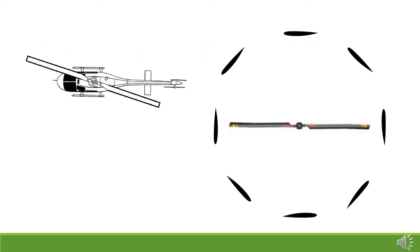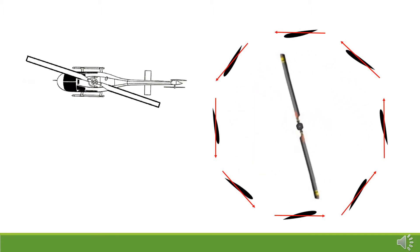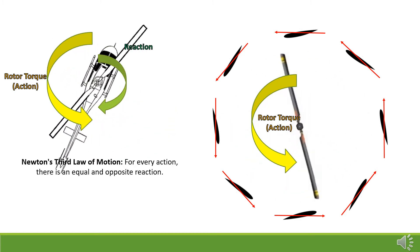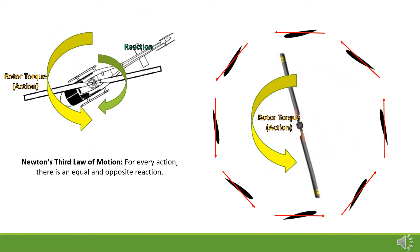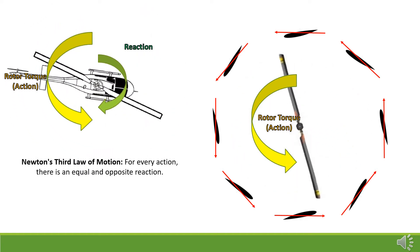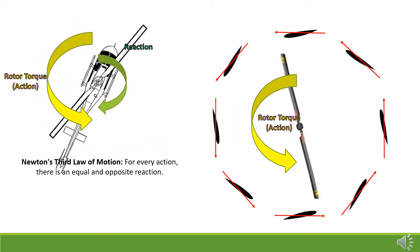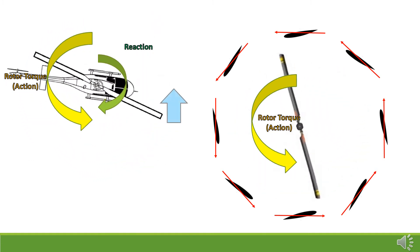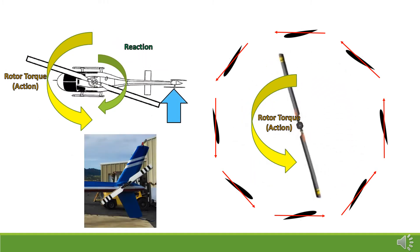With a single main rotor helicopter, the engine turning the rotor blades creates a torque effect. When viewed from above, the vast majority of helicopter rotors turn counterclockwise, creating a counterclockwise torque. By Newton's third law of motion, that torque causes the body of the helicopter to rotate in the opposite direction — clockwise. To eliminate this rotation, an anti-torque control must be developed to allow the helicopter to maintain its heading and provide yaw control. This is accomplished through a variable pitch anti-torque rotor, or tail rotor.